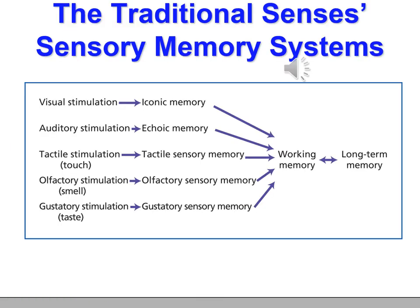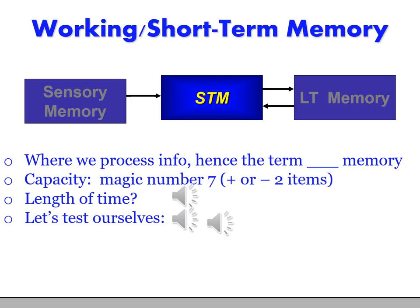This slide reinforces the idea that each sense has its own sensory memory. Some terms like gustatory and olfactory should look familiar. This slide also uses the term tactile for touch, and introduces two new terms: iconic and echoic memory. Content in our sensory memory is constantly being replaced by new content, but a small amount does get passed to our next memory system — short-term memory. This is where the memory is processed, hence the term working memory.